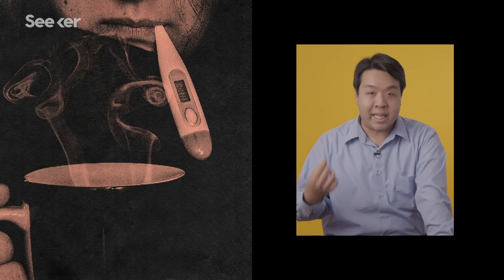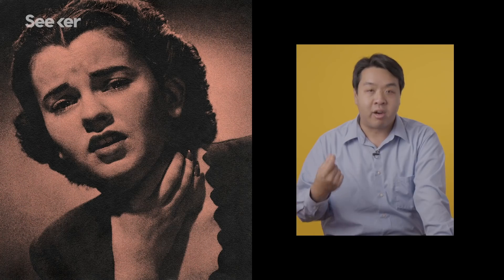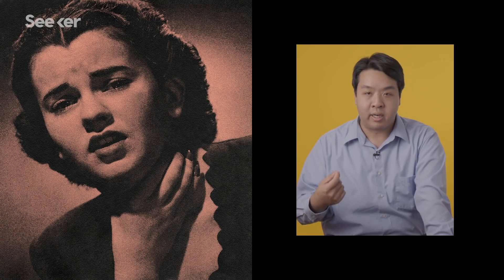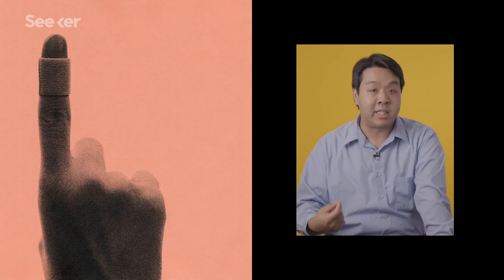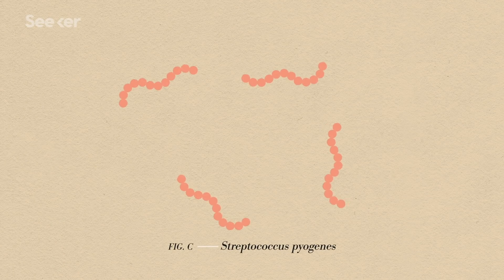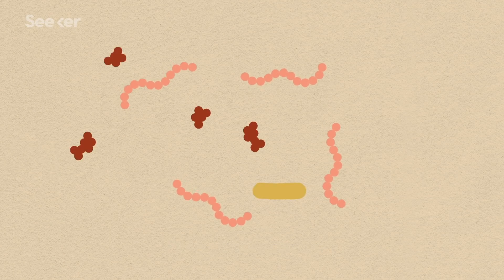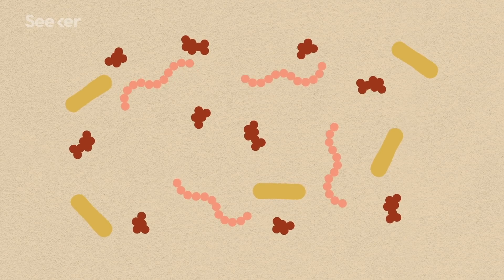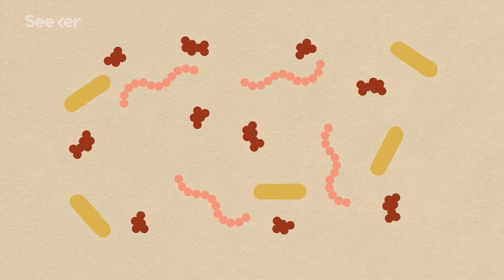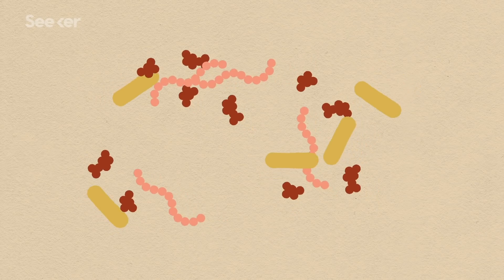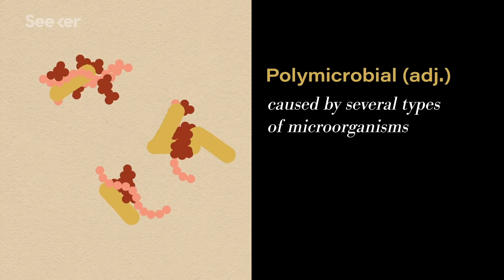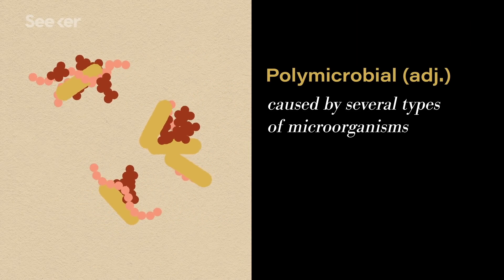600 million people a year get strep throat. But that same pathogen can also, in rare cases, cause necrotizing fasciitis. The leading cause is Streptococcus pyogenes, but it can also be caused by both gram-positive and gram-negative types of bacteria, including Staph aureus and Vibrio. And some actually are polymicrobial, so there are several bacteria together that form these necrotizing invasions.